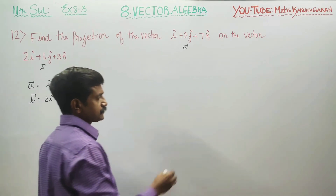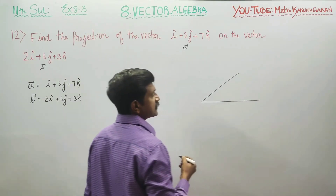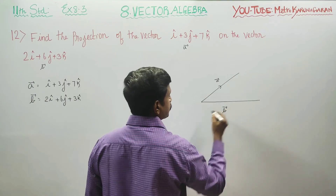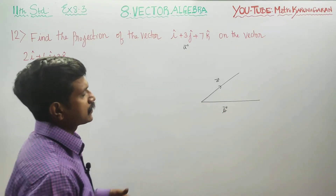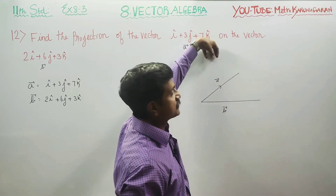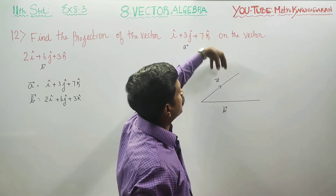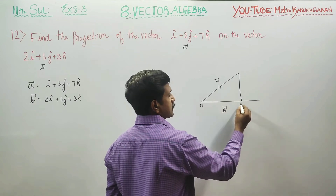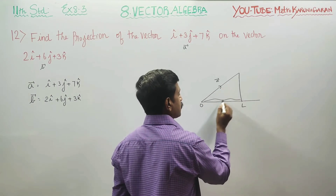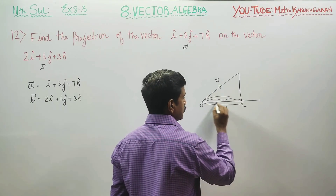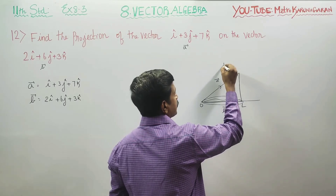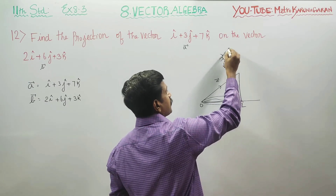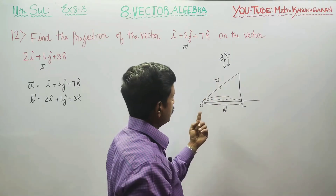What is the meaning of projection? There are two vectors — this is A vector and this is B vector. Projection is like a beam of light: in the line of shadow, the shadow falls on a line. Where there is light, there is a shadow cast. This shadow is the projection.